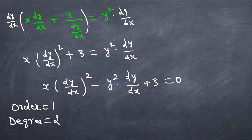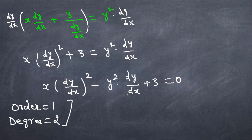For a linear differential equation, the degree needs to be 1. Here the degree is 2, so the first condition for linearity is not met. Therefore, this is a nonlinear differential equation.